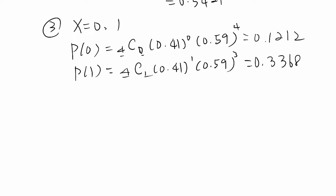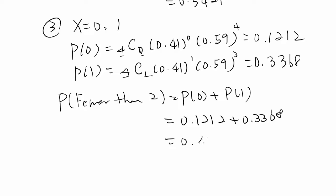If you do it, you will get 0.1212 and 0.3368. So the probability for fewer than 2 will be P(0) plus P(1), which is 0.1212 plus 0.3368. If you calculate that, 0.4580 in this case.